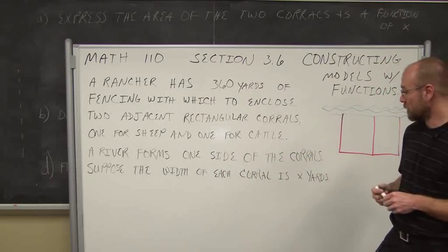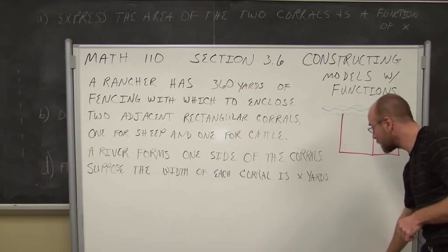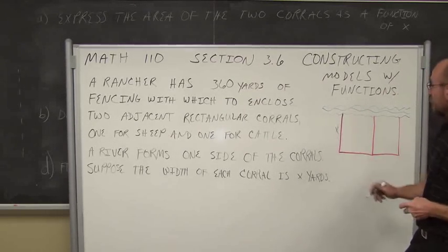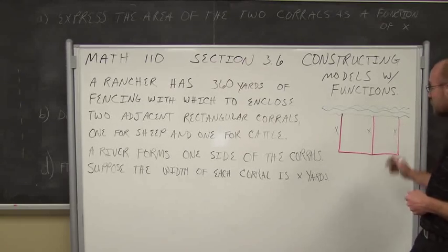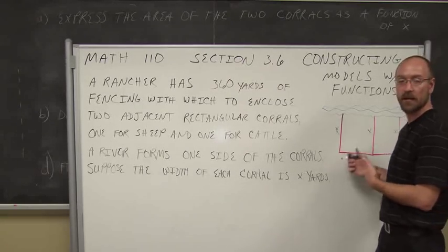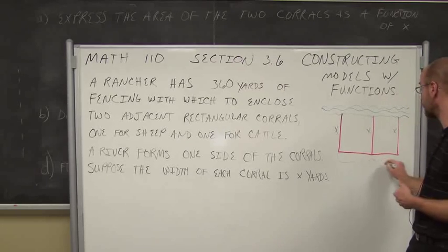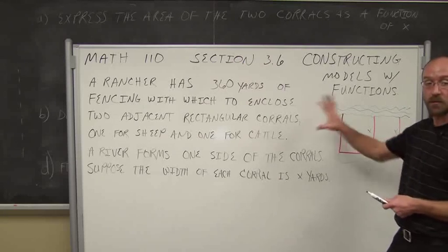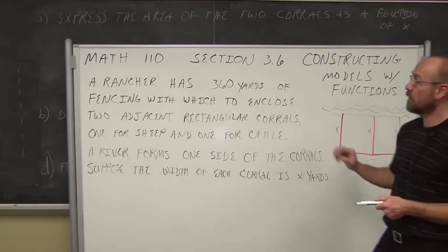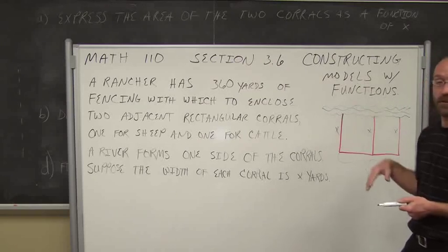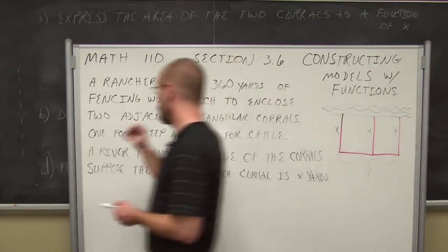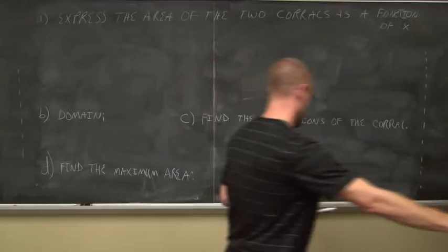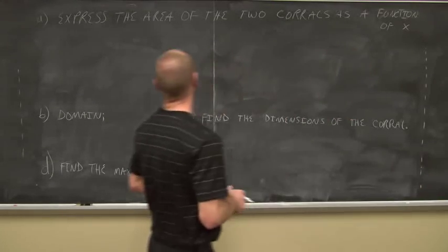Suppose that the width of each corral is x yards. Let's say that our width is this right here. This is the width, this is also the width, this is also the width. So let's assign another variable to the length. Let's call this y. So now we have an illustration to work with, and this was given information. So let's see what the question is going to ask. The question's broken into several parts, so let me just move this board out of the way. Hopefully you take a mental picture of our illustration there.